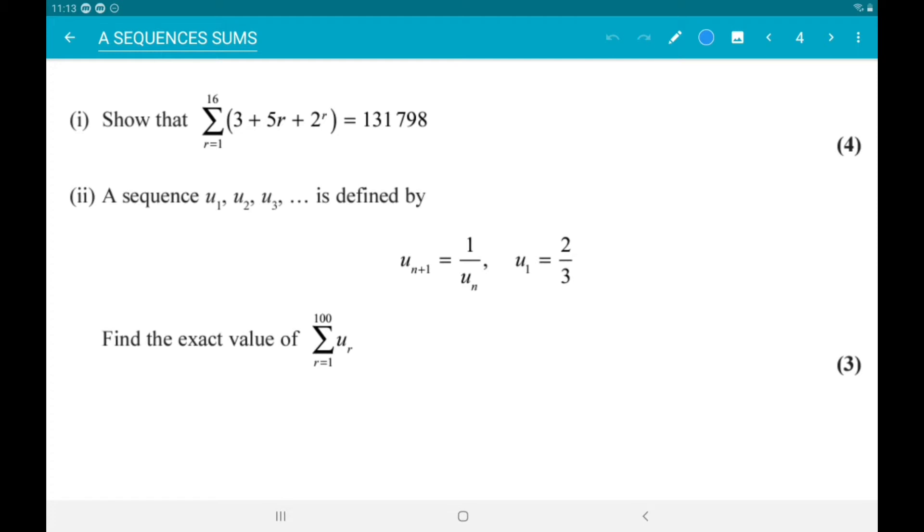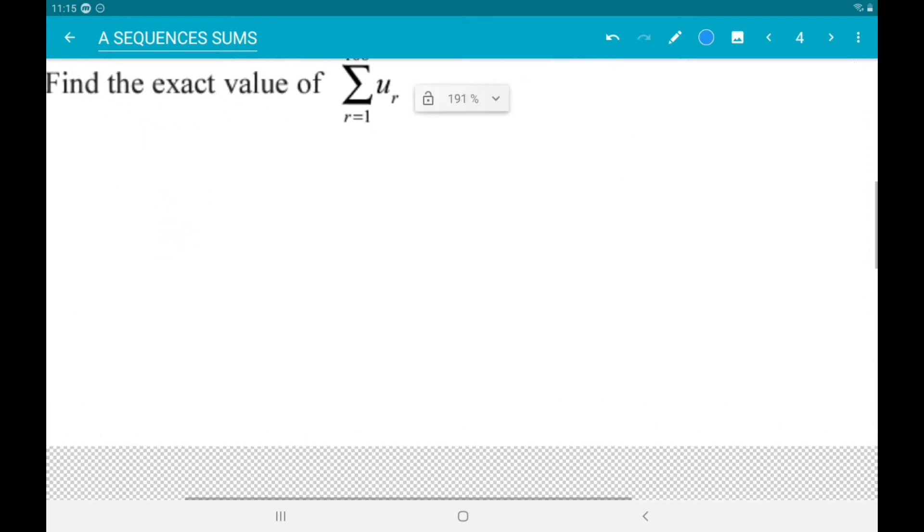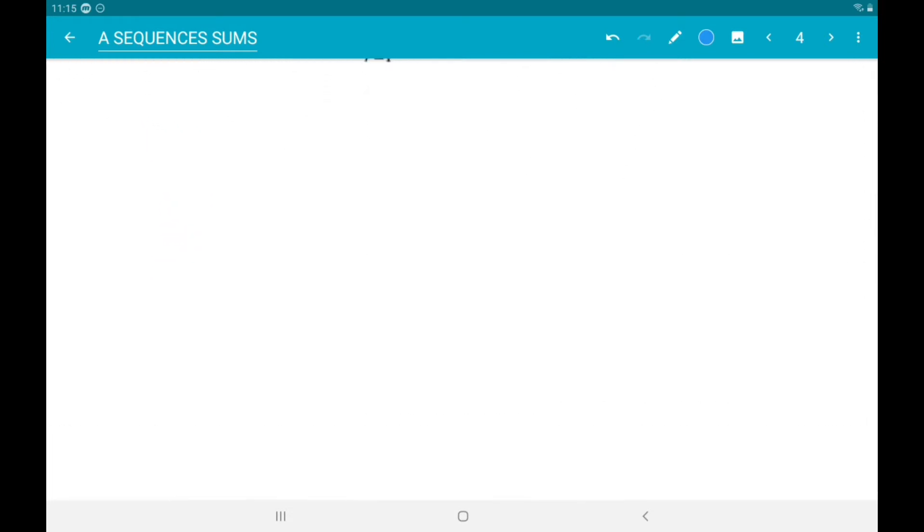And I'm also going to use n instead of r because we need r in the geometric sum. Alright, so the arithmetic part is 3 plus 5n.